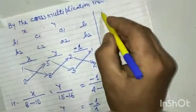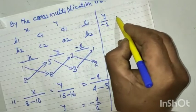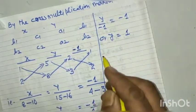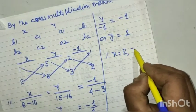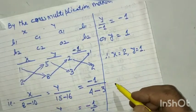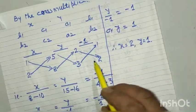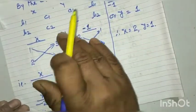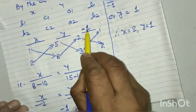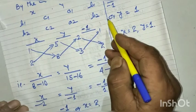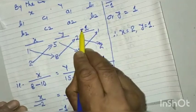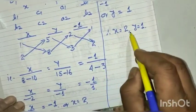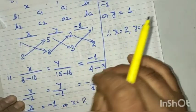y upon −1 (that is 15 − 16) is equal to −1 upon 1, therefore y = 1. We have to keep attention: if the constant term is on the right side, then we use minus 1. So the solution is x = 2 and y = 1 for this pair of linear equations.